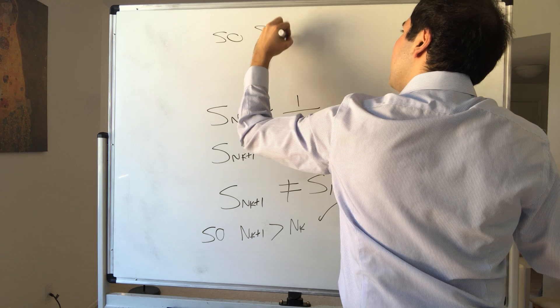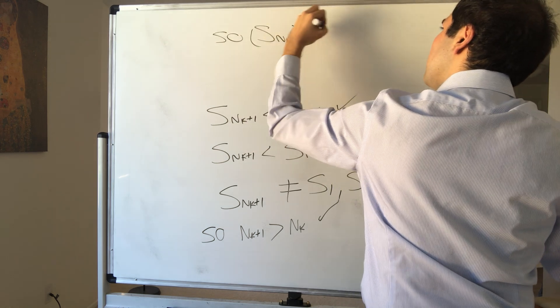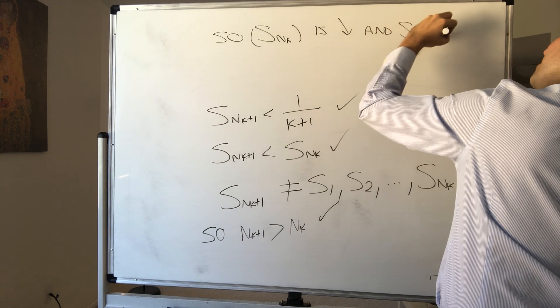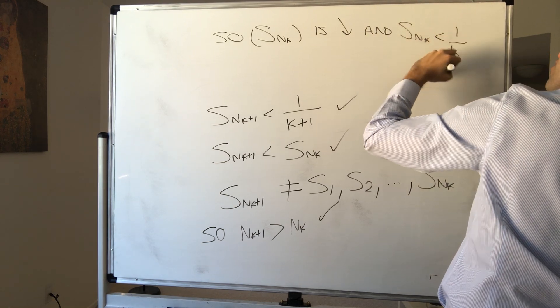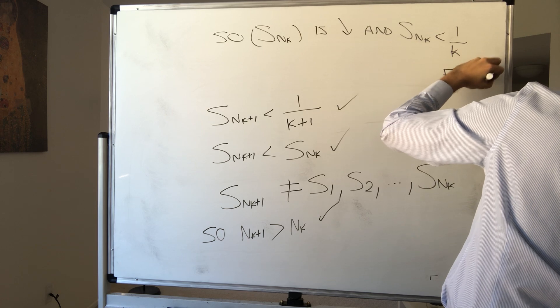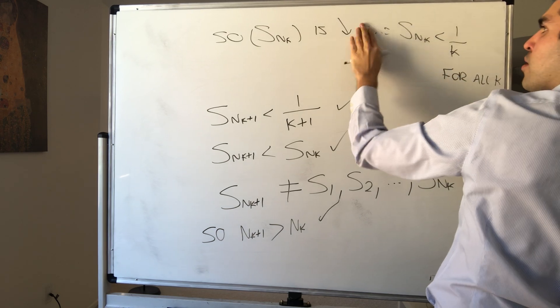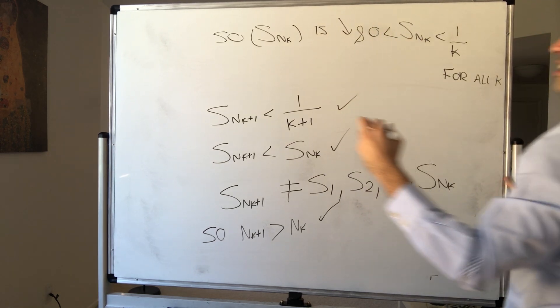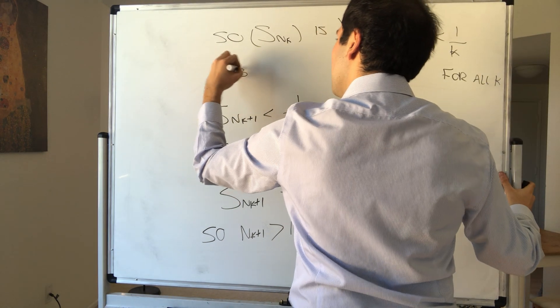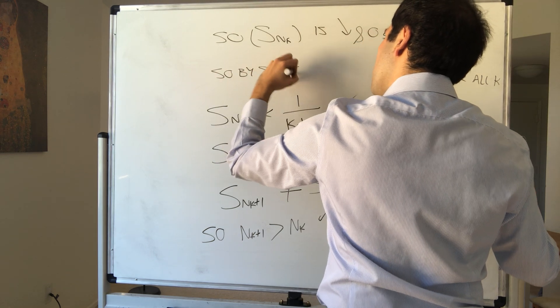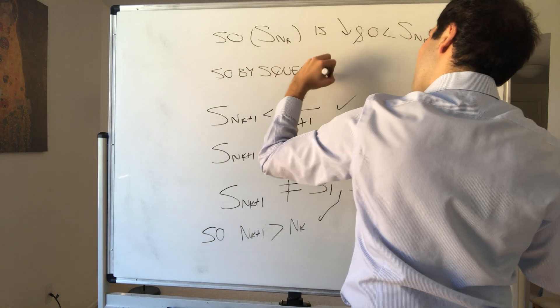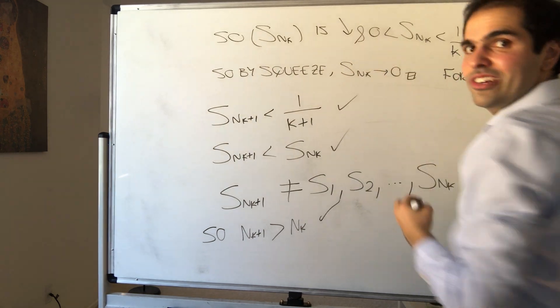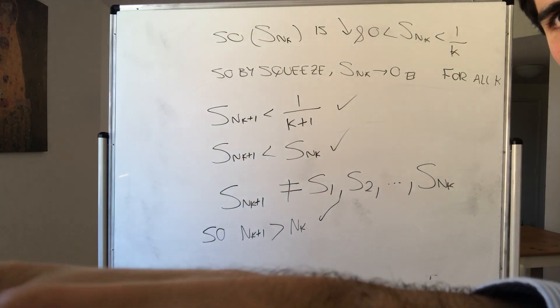So Snk is decreasing, and Snk is less than 1 over k for all k. But remember, this term is also positive. So in the end, by the squeeze theorem, Snk goes to zero. And we're done. And we can stay home happy. Alright, thank you.